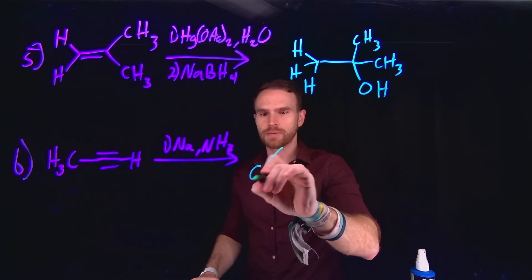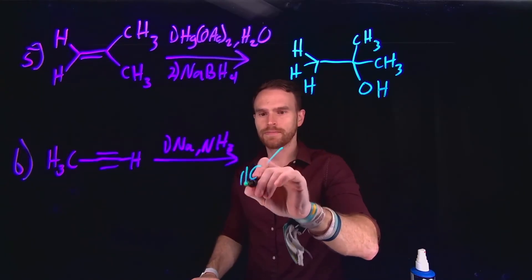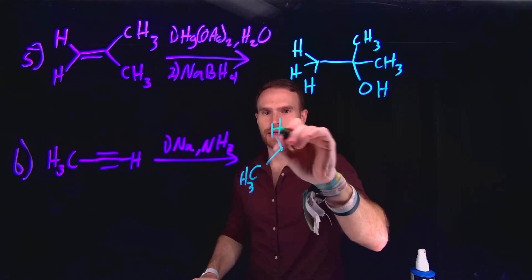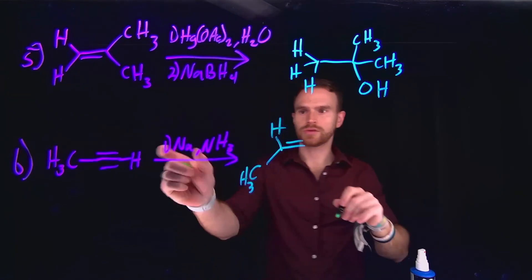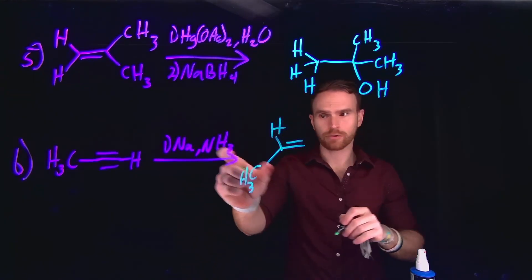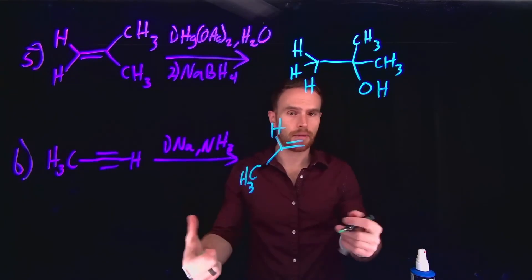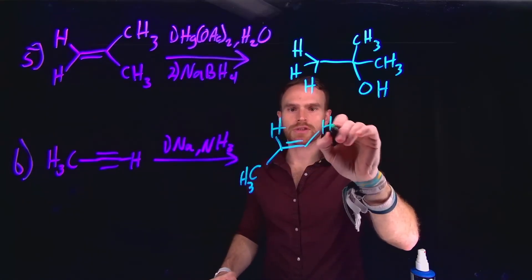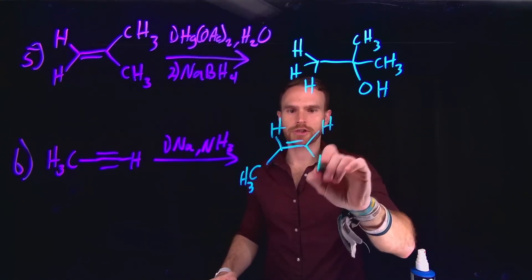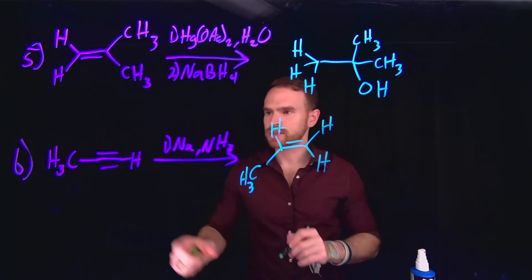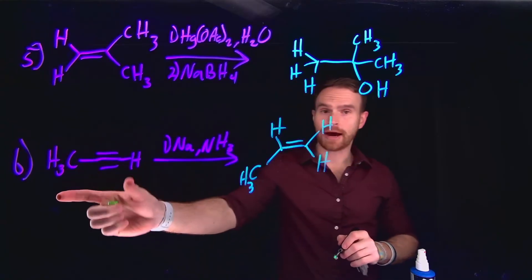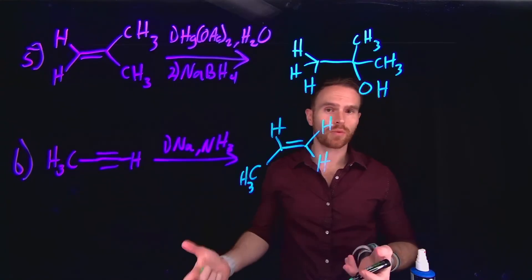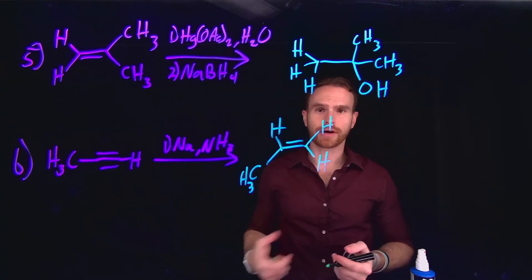The product formed is an alkene, achieved by using sodium metal dissolved in ammonia to provide extra electrons to carry out this reduction. This takes us from an alkyne to an alkene — called reduction of an alkyne.